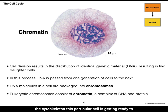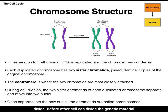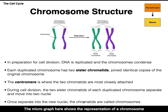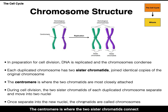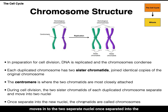This particular cell is getting ready to divide. Before the cell can divide, the genetic material must make a copy of itself and condense to form chromosomes. Once duplicated, each chromosome has two sister chromatids that are joined together — the structure looks like an X. The centromere is where the two sister chromatids connect. During cell division, each duplicated chromosome separates at the centromere and moves into the two separate nuclei. Once separated into the new nuclei, chromatids are called chromosomes.